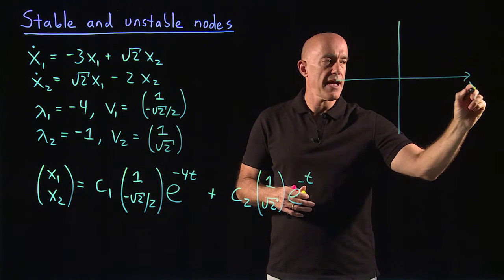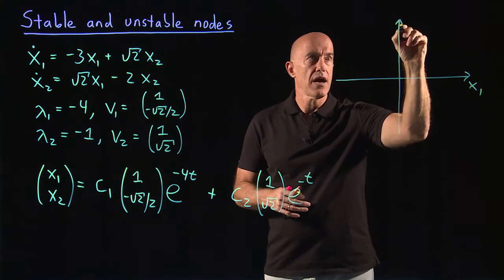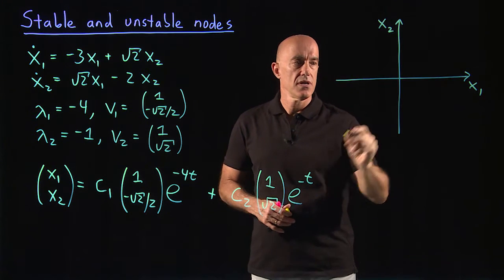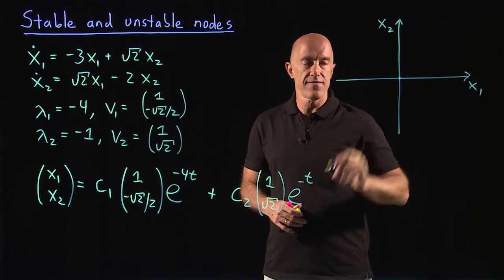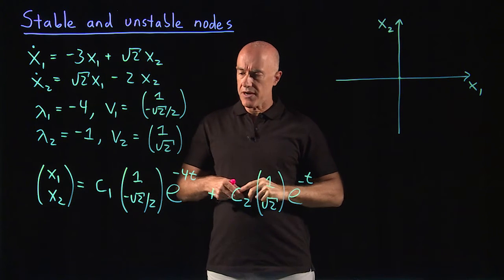So our x-axis is x1, our y-axis is x2. The origin then is a fixed point. So how do we draw this?